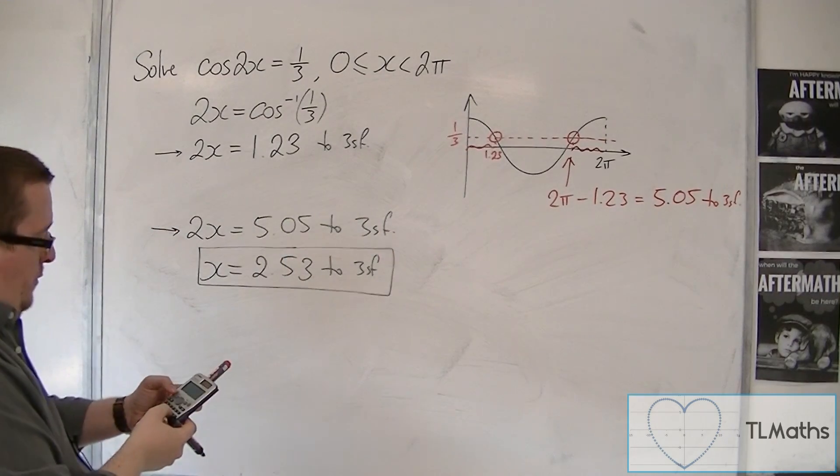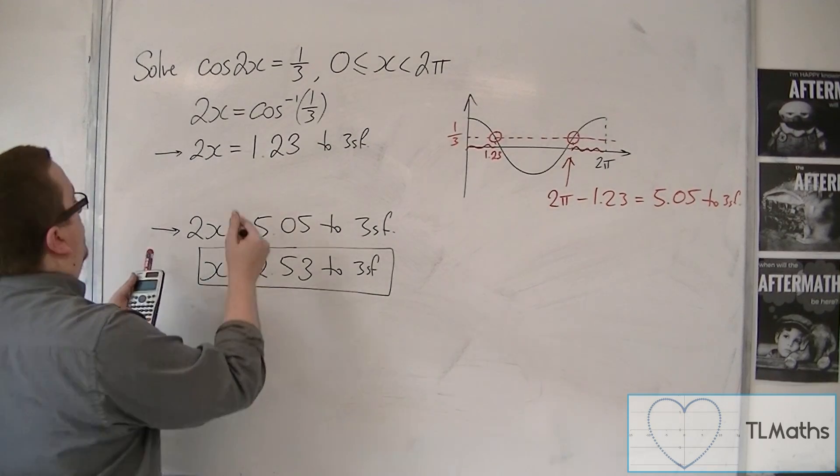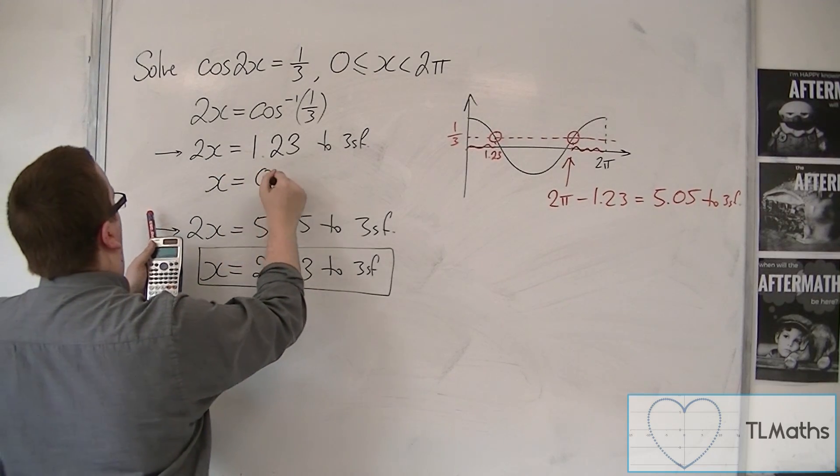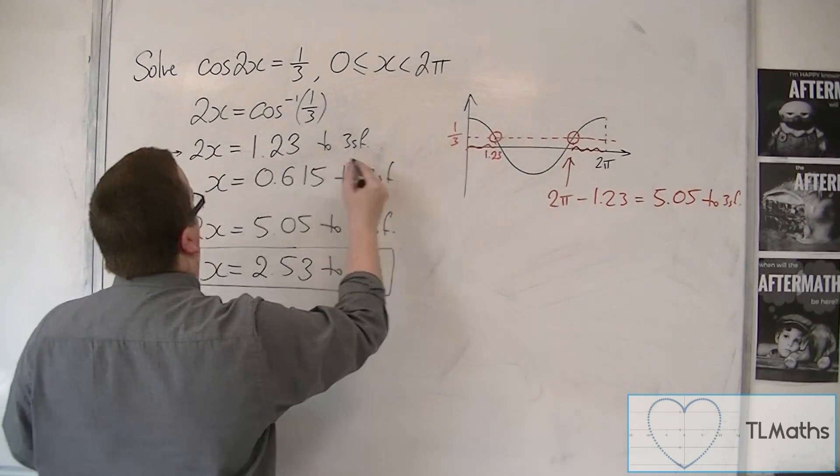And if I go back to that one, inverse cos of 1 third, divide that by 2, we get x is 0.615 to 3 significant figures.